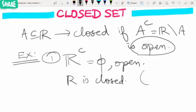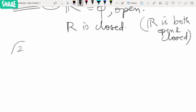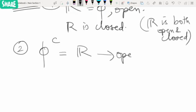our previous video, we can say that R is both open and closed. Now the second example: what about the empty set? The empty set's complement is R. Since R is open, the empty set is closed. So the empty set is also both open and closed.